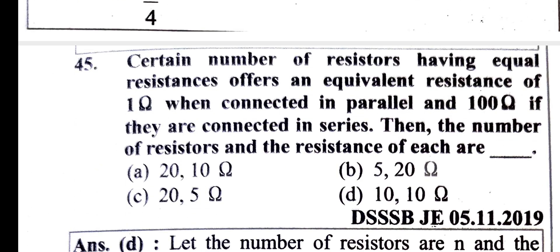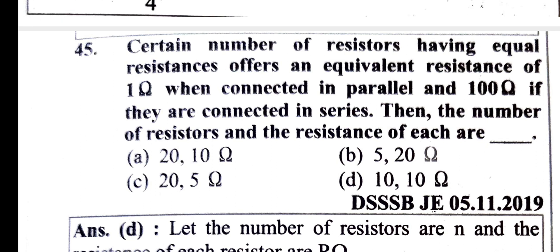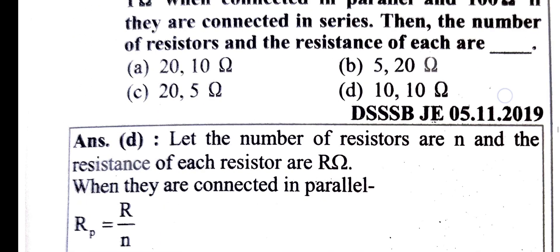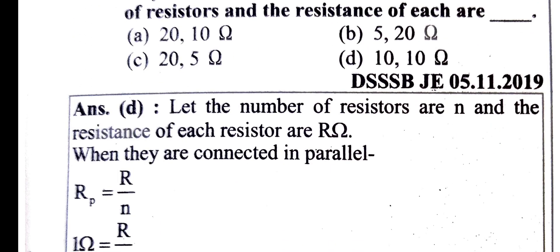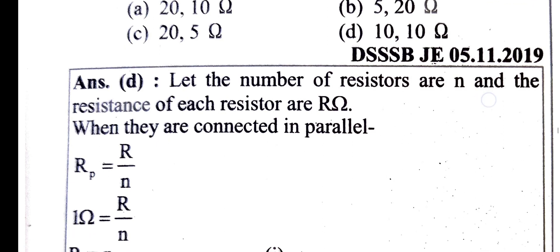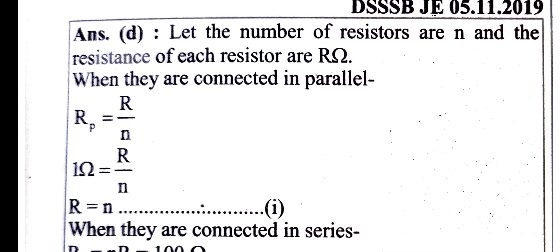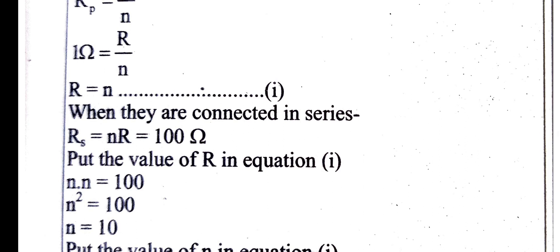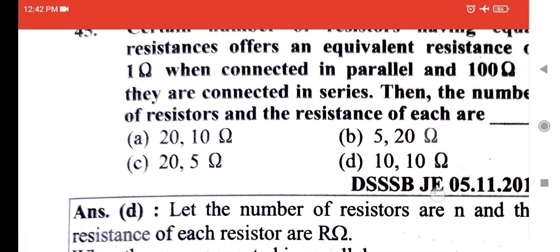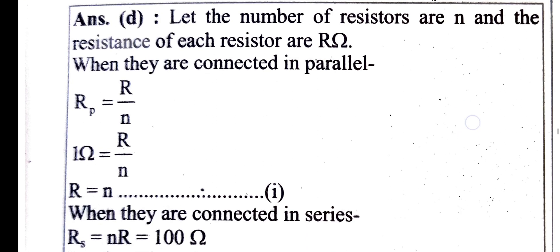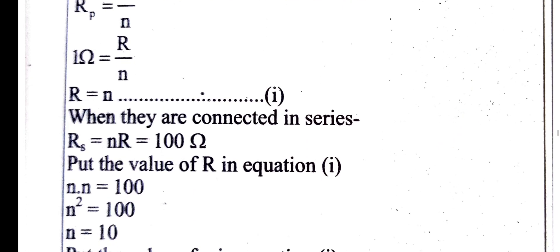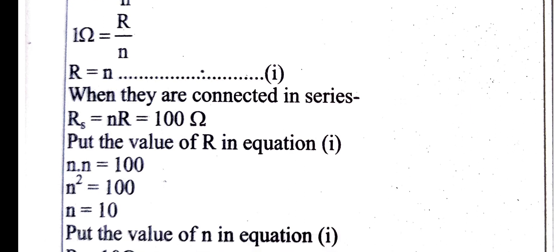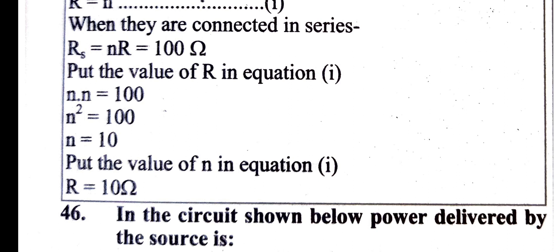N resistors having equal resistance offer equivalent resistance of 1 ohm when connected in parallel and 100 ohm when connected in series. Find the number of resistors N and the resistance of each R. In parallel, Rp equals R by N which equals 1 ohm. In series, N into R equals 100. Substituting, N² equals 100, so N equals 10 and R equals 10 ohm.